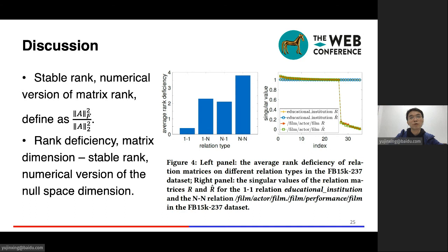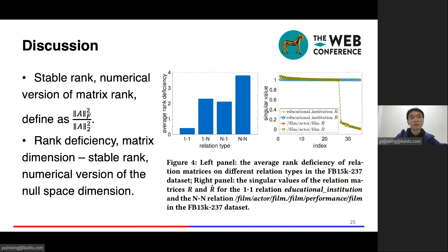To summarize, MQuadE is a unified model for knowledge graph embedding. It has good performance on link prediction and triple classification. That's all. Thank you for listening.